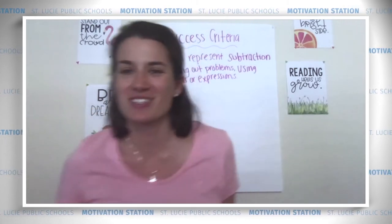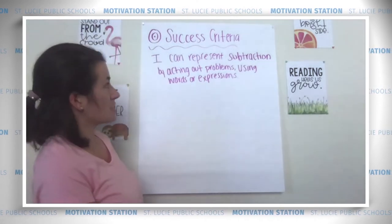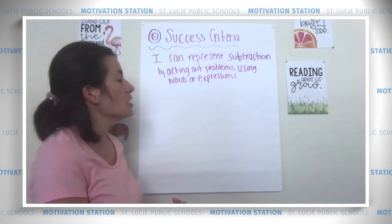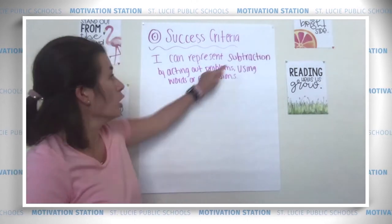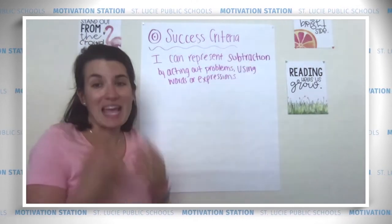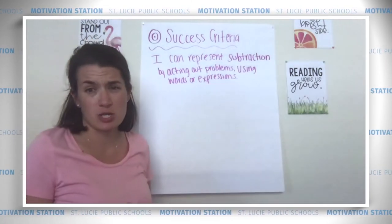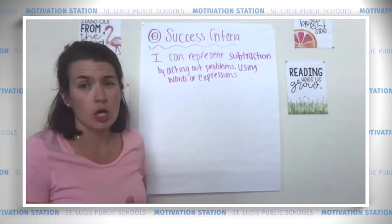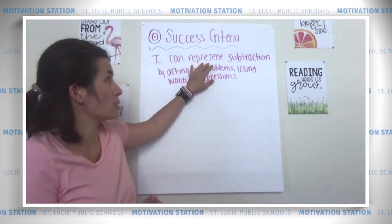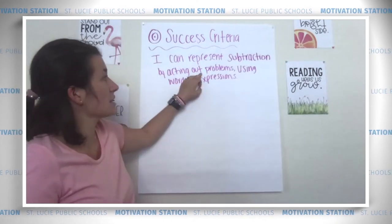Let's go over our success criteria. Today our success criteria is: I can represent subtraction by acting out problems using words or expressions. So we're working on subtraction today, which means taking away, and we're going to work really hard on word expressions using equations. Let's say it together: I can represent subtraction by acting out problems using words or expressions.